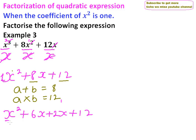We factor out what is common in the first two terms, which is x. So we have x times x plus 6. Then we factor out 2 from the remaining terms, giving us plus 2 times x plus 6.